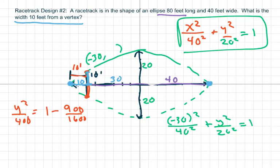And this whole thing is going to be 700 over 1600. So you get y squared equals 400.